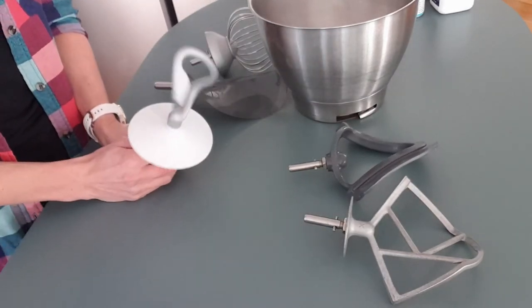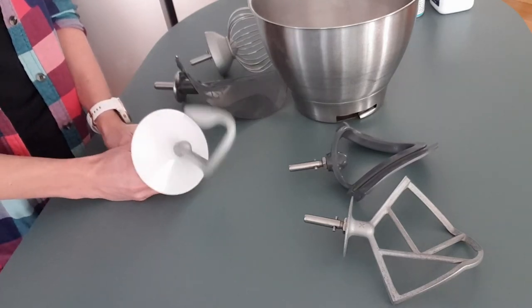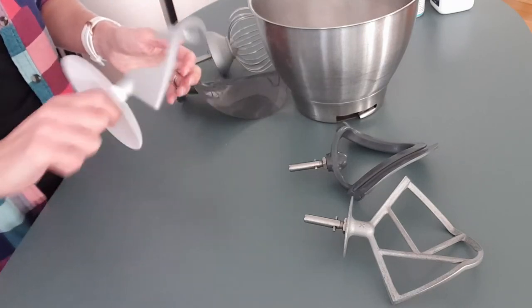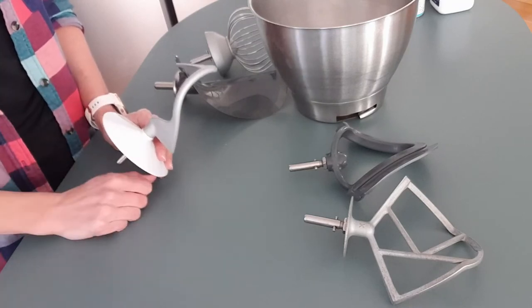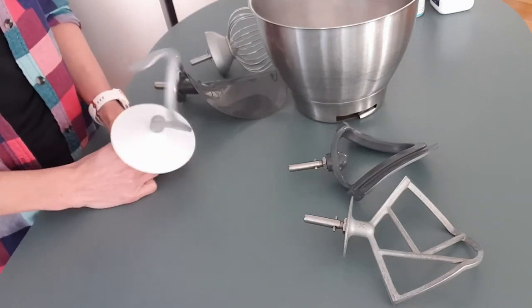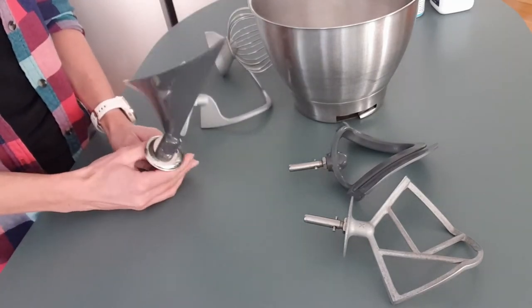And then the dough hook. Again, easy to remember—you can see it looks like a hook, and that's for bread doughs and things. So it literally hooks the dough on there, and it sort of just beats it against the side of the bowl. So instead of you having to use your hands to knead the dough, it just does it for you against the side of the bowl. Works really good.